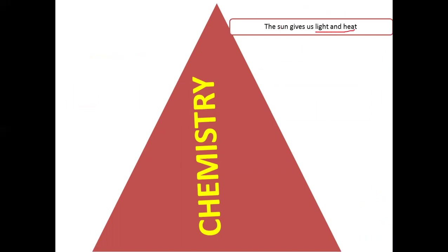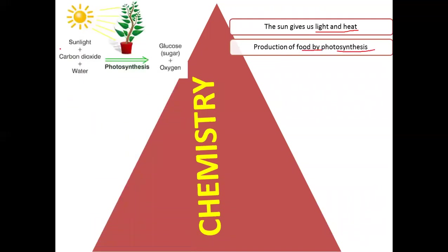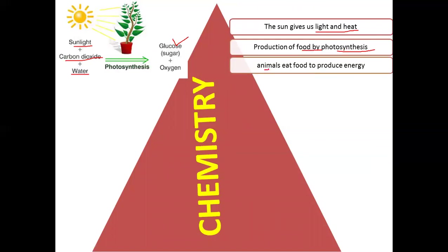The Sun gives us light and heat which is essential for the existence of life on Earth, but the light and heat produced by the Sun are because of a chemical reaction called nuclear fusion taking place inside the Sun. Similarly, production of food by photosynthesis is also a chemical reaction in which, in the presence of sunlight, carbon dioxide and water react to give glucose, and photosynthesis is also responsible for the existence of life.